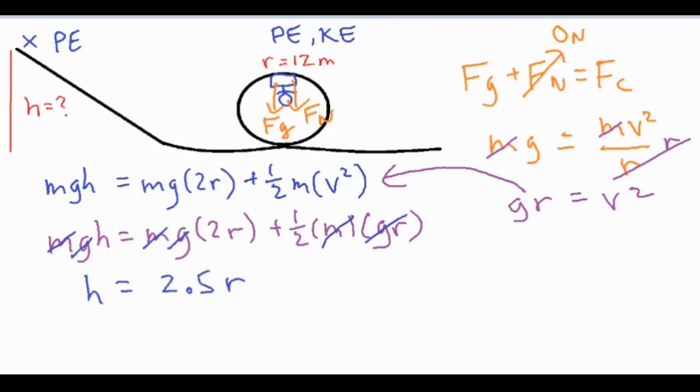And we do actually know the radius. So we can go ahead and plug in the 12 meters over there. So then our final height is going to be 30 meters.